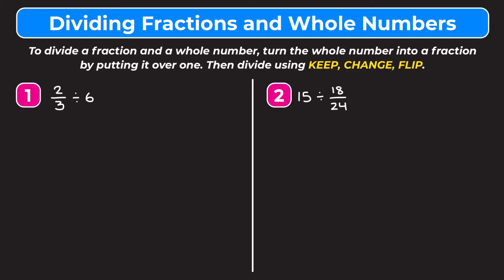Let's take a look at Example 1, which is 2/3 divided by 6. We're going to start by changing 6 into a fraction — we keep 2/3 as it is, divided by 6 over 1, because 6 is the same as 6 over 1. Now we're going to keep-change-flip: keep 2/3, change the division sign to multiplication, and flip the second fraction upside down so 6 over 1 becomes 1 over 6.